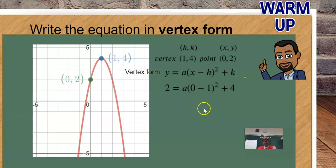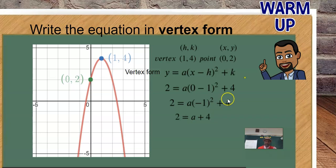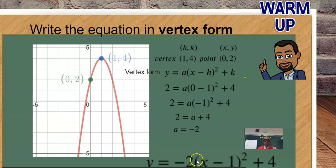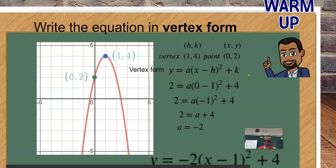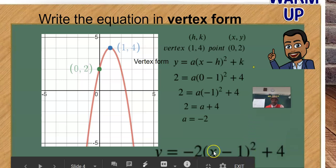Now let's simplify. 0 minus 1 is negative 1, so you get a negative 1 squared inside the parentheses. But negative 1 squared is negative 1 times negative 1, which is just 1. And 1 times a is just a. Subtracting 4 from both sides reveals what a is: a is negative 2. Since a is negative 2, we know a, h, and k. We can write the answer: y = -2(x - 1)² + 4. That's in vertex form.